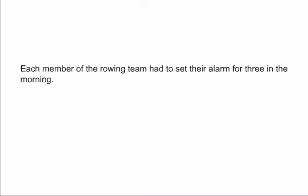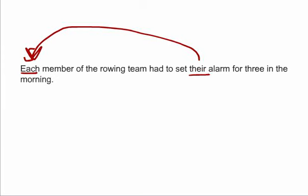This one's a little bit tricky, but the subject of the sentence is actually each — each individual member of the rowing team. So we're talking about each one of them by themselves, not as a group, but individually. Each member of the rowing team had to set their alarm for three in the morning. The pronoun of this sentence is their. This pronoun is referring back to and renaming, or standing in the place of, the subject of the sentence. Each was singular, but their is plural.